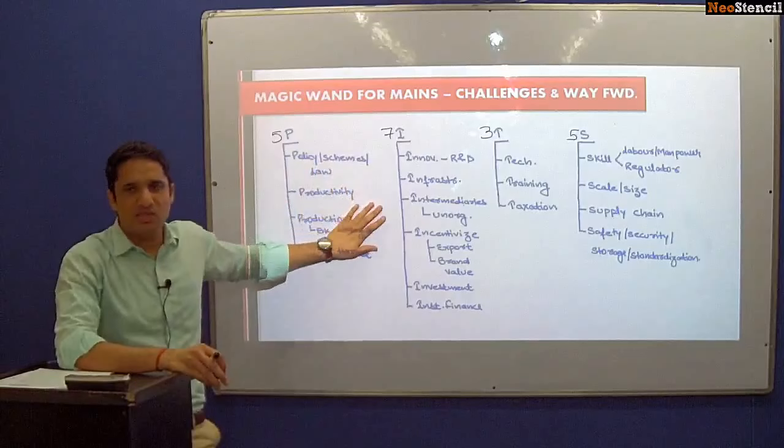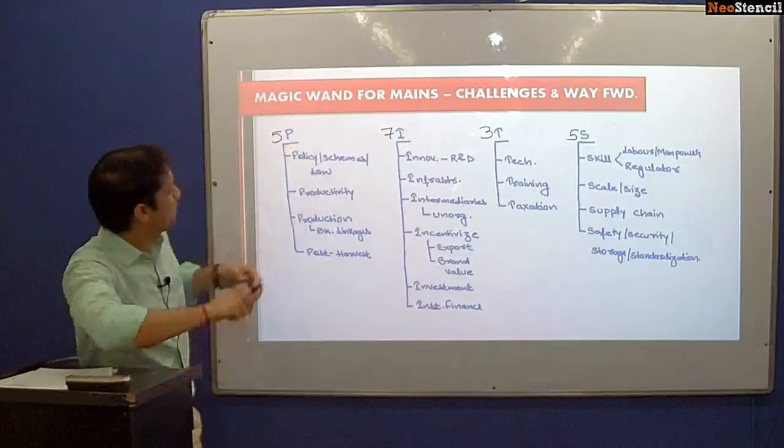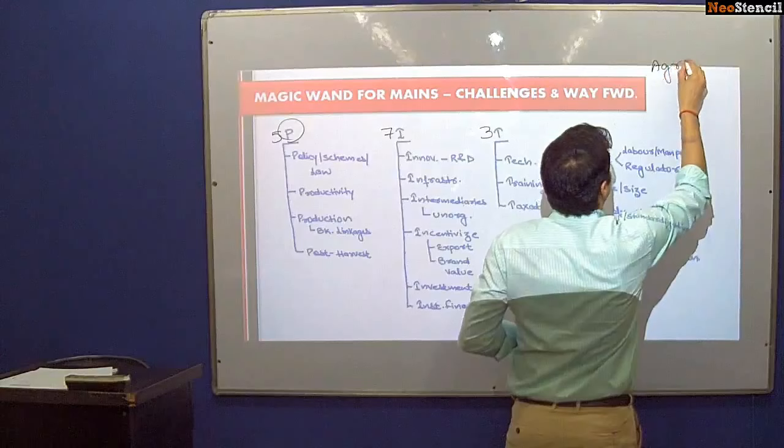We will discuss how to use these dimensions in education, health, internal security, infrastructure, banking, and agriculture. First, let us take the example of agriculture, then education, then health, then infrastructure, then banking, then internal security.